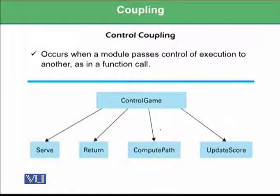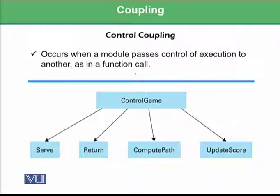There are different types of coupling. One is known as control coupling. This occurs when a module passes control of execution to another, as in a function call. For example, our main module control game calls the serve module. When control is passed to the serve module, this is called control coupling.